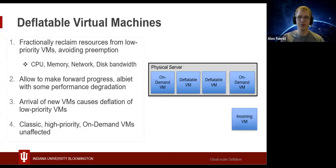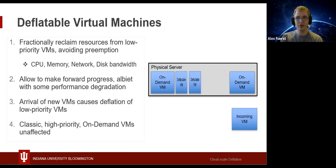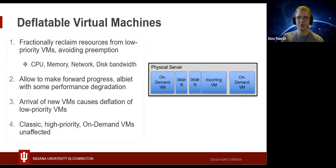Our answer to this conundrum is for cloud providers to offer deflatable virtual machines. These low-priority VMs avoid preemption by having their resources — CPU, memory, network, and disk bandwidth — fractionally reclaimed instead of wholly revoked. The VMs are then kept running and can continue to make forward progress with a reduced resource allocation. As new VMs are created on physical hosts, low-priority VMs are deflated instead of being preempted to make room for the incoming VM. Note that deflation will only happen when there is resource pressure; otherwise, deflatable VMs behave exactly like conventional VMs.